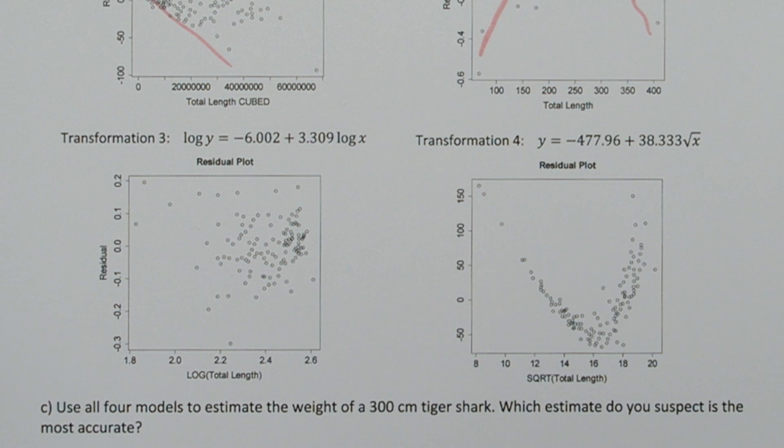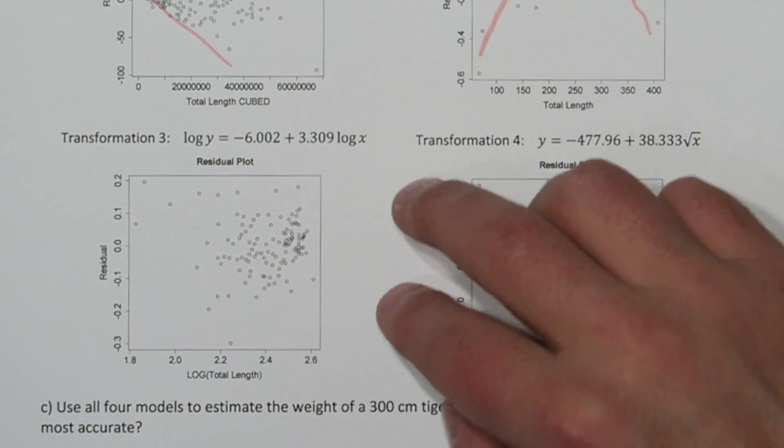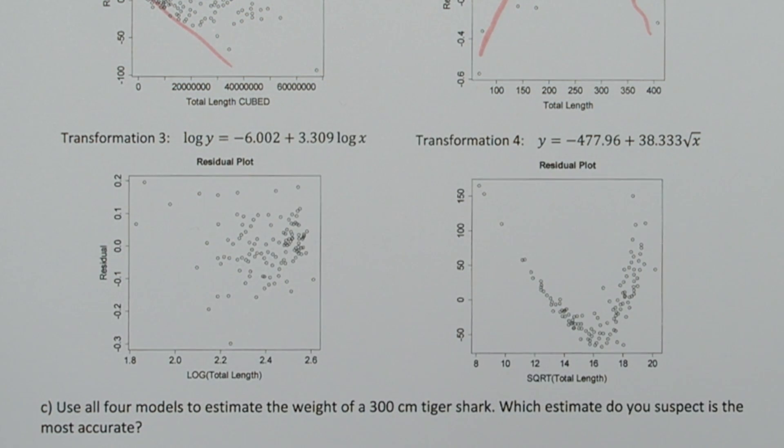The third transformation shows a pretty much random scatter throughout the residual plot. This one, I suspect, did achieve linearity.